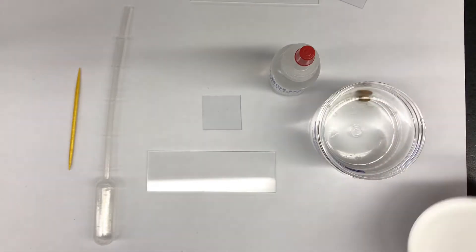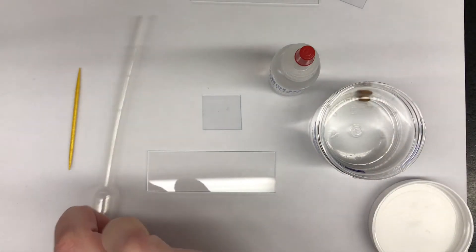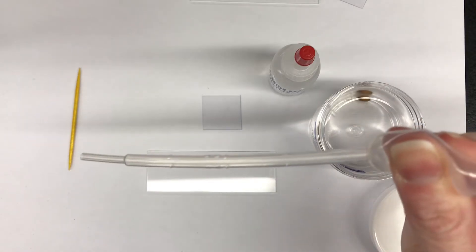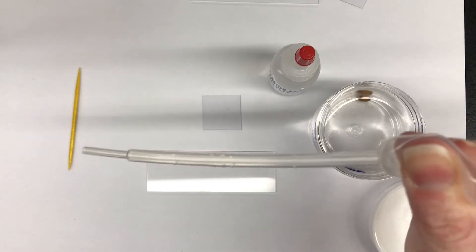You're going to take the lid off of your specimen jar, pick up your plastic pipette, and squeeze the plastic pipette before putting it into the liquid.